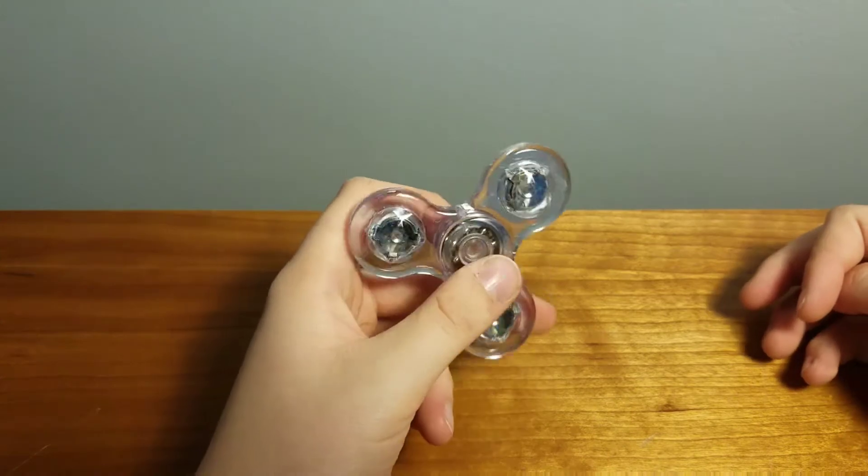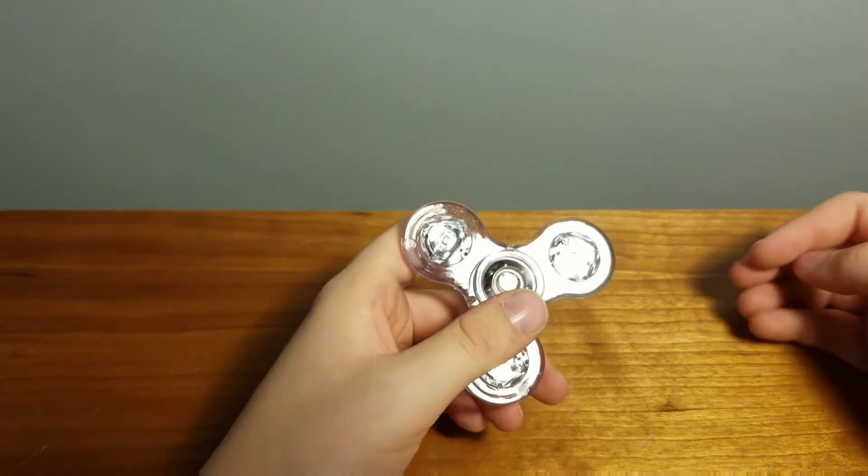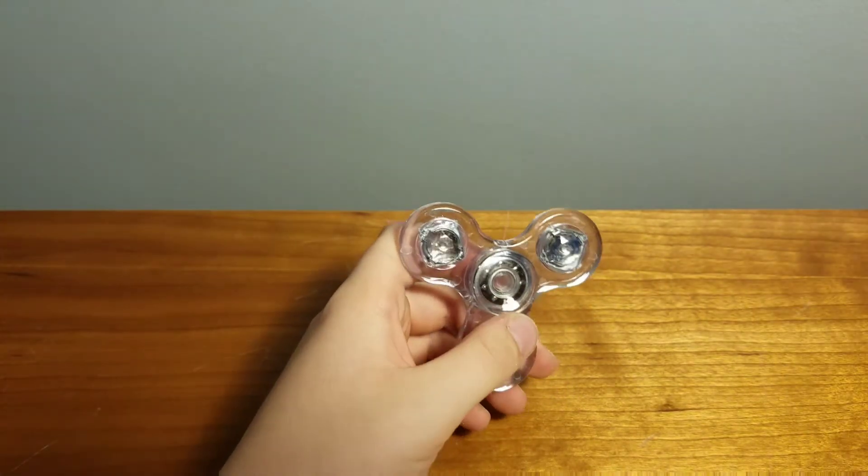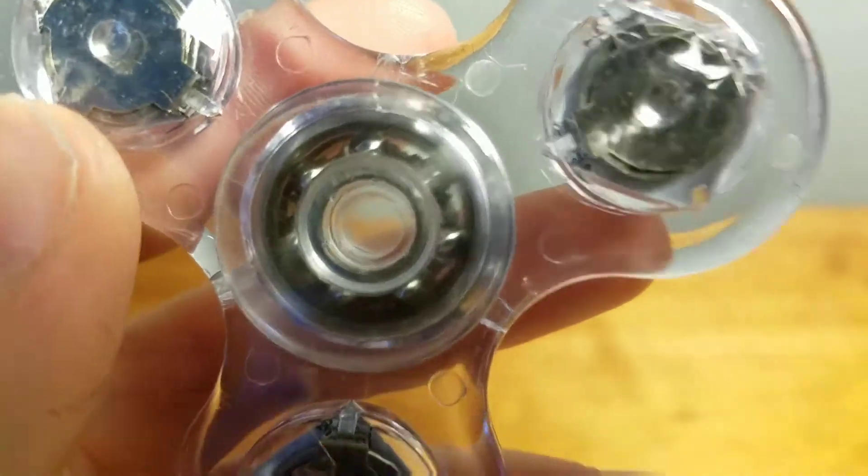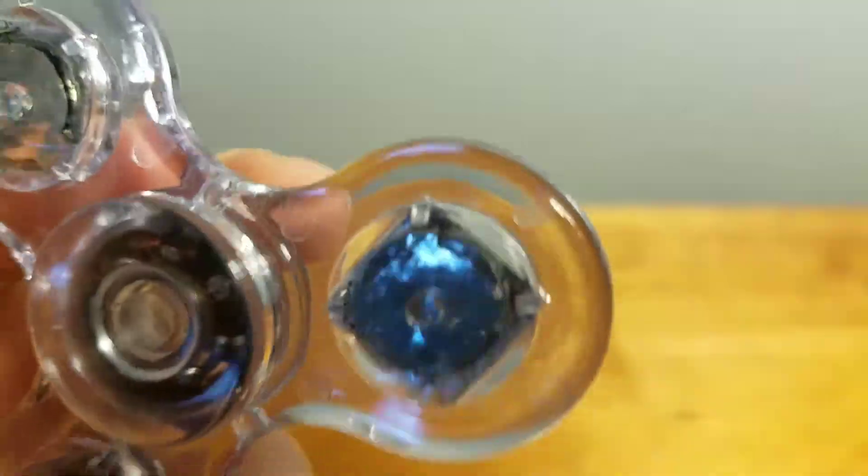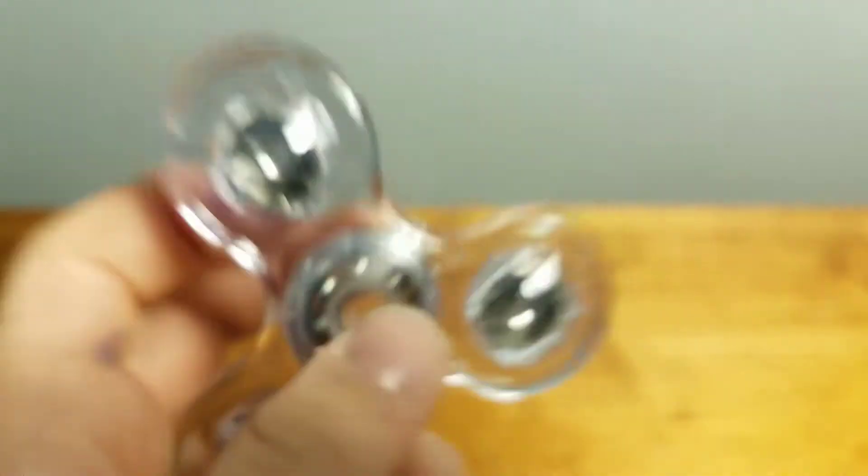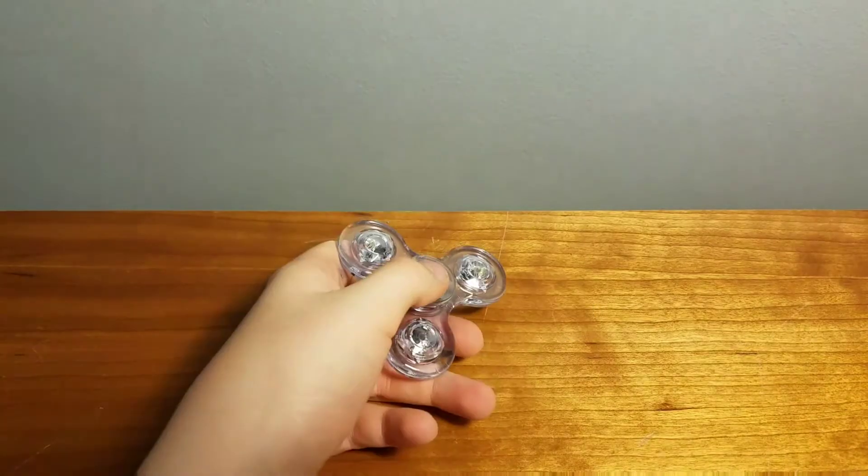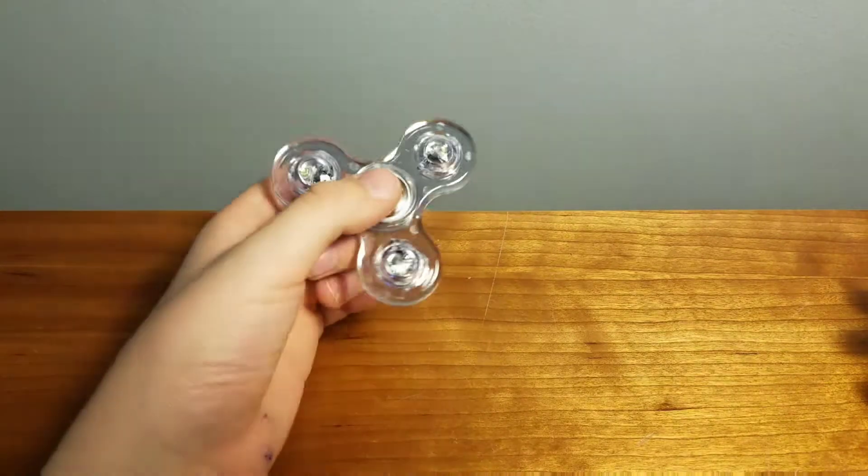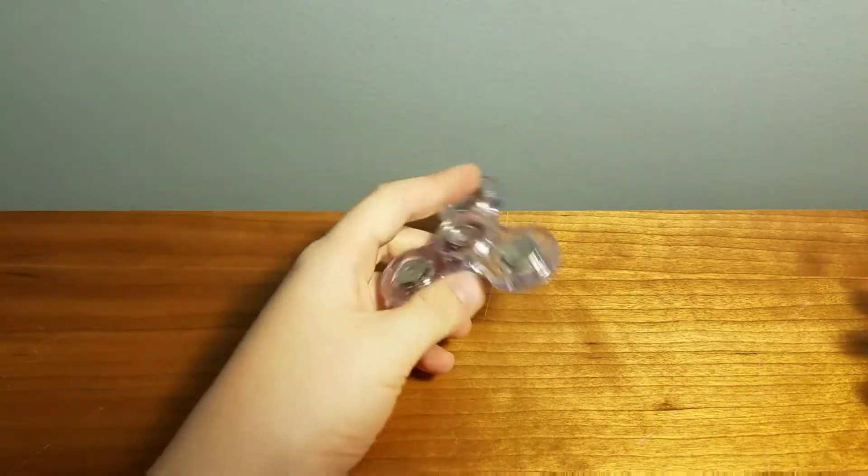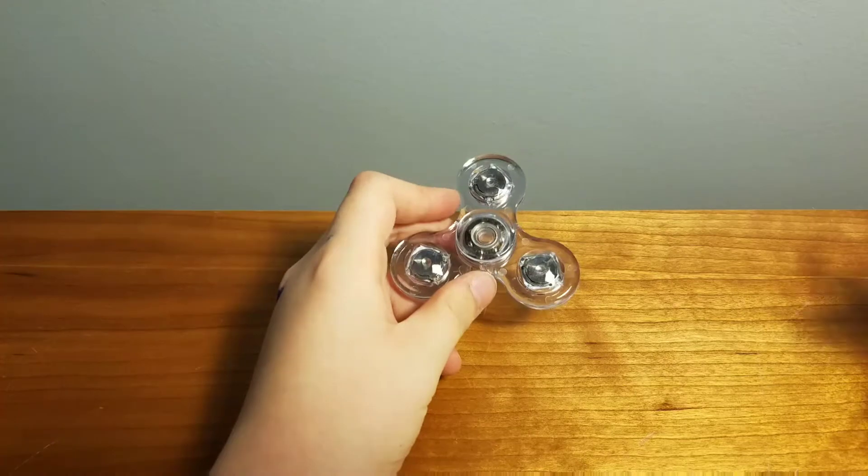And here is the spinner so it feels extremely light to the hand so this is rocking 608 it looks like hybrid ceramic or steel so not the expensive full ceramic bearings this feels a little flimsy and like really light to the touch but the lights will probably make up for that.